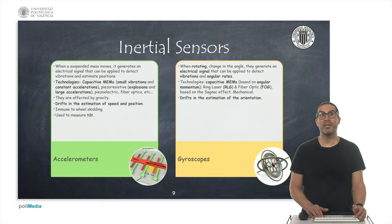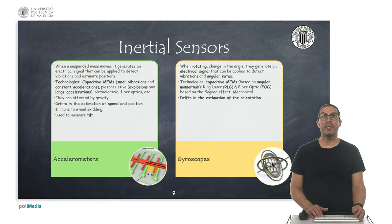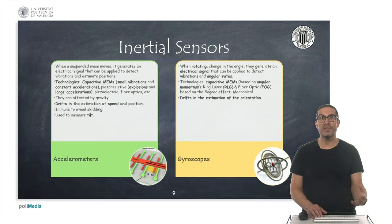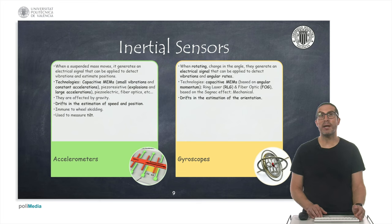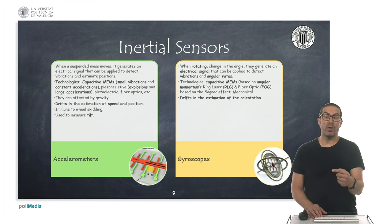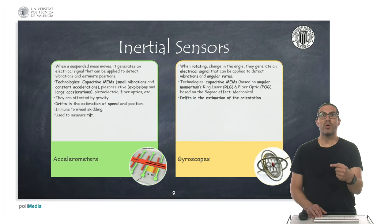Accelerometers are affected by gravity, and therefore gravity must be compensated if we want to use them to estimate robot position. Their measurements include noise and offsets that cause drift in the estimation of robot position and speed. However, they are very useful for closing control loops that require quick response, such as stabilization of drones.